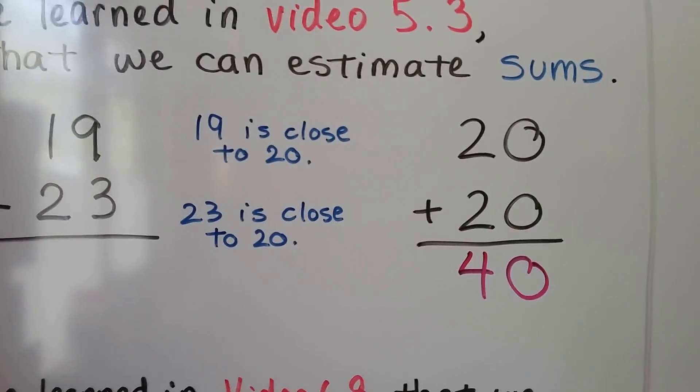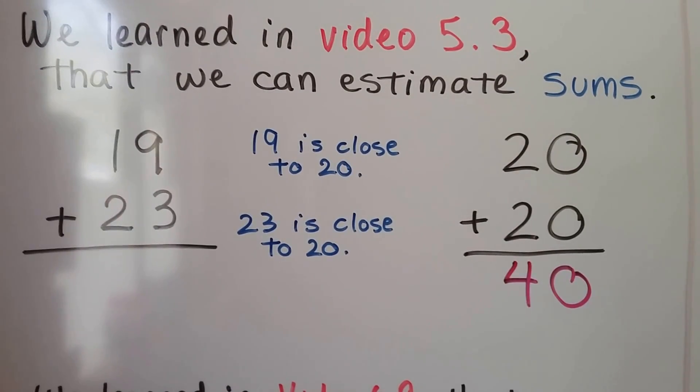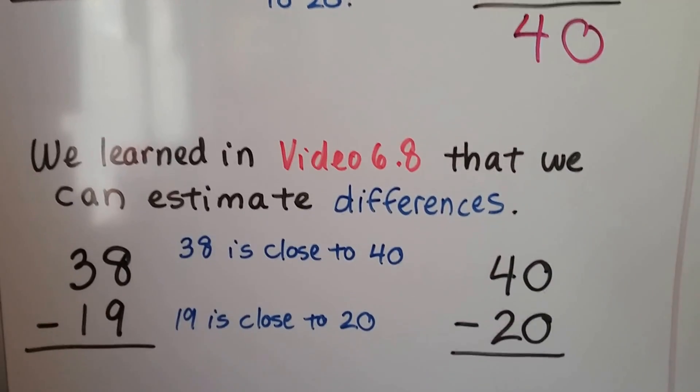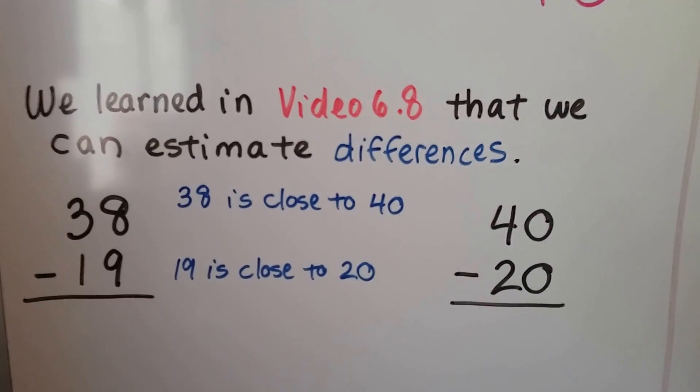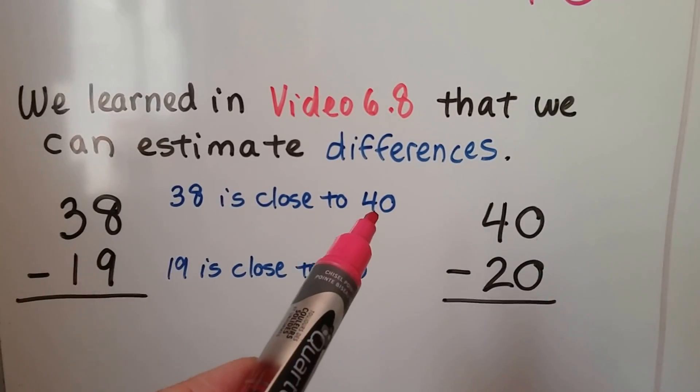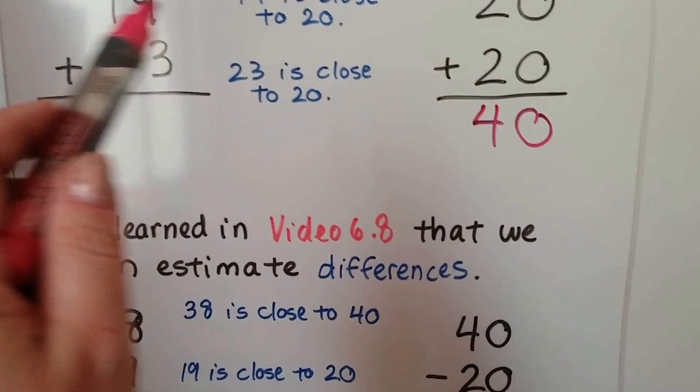We learned in video 6.8 that we can estimate differences. We have 38 minus 19. 38 is close to 40, and remember 19 is close to 20. So we can estimate the difference by subtracting 40 minus 20, which would be 20.